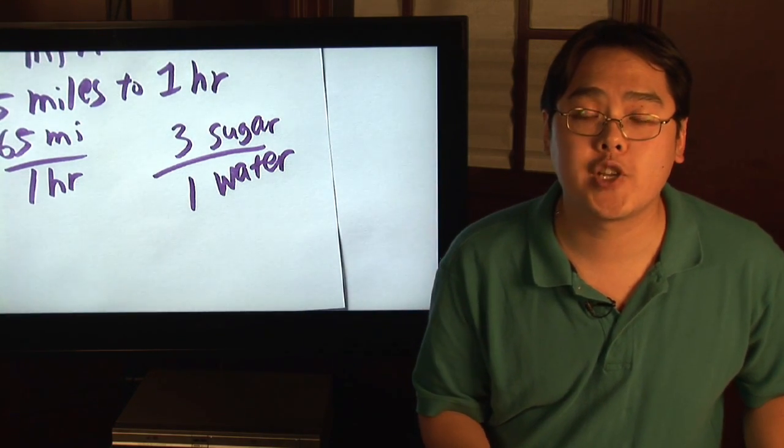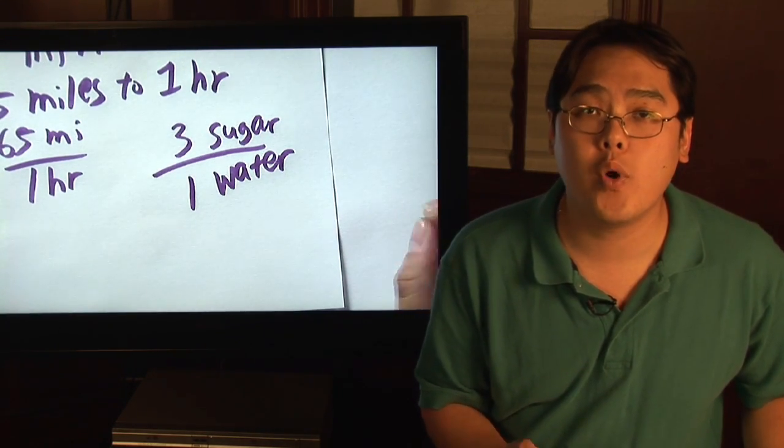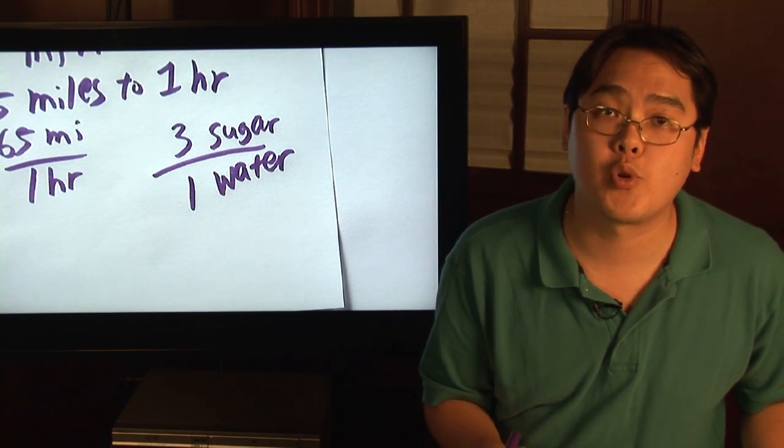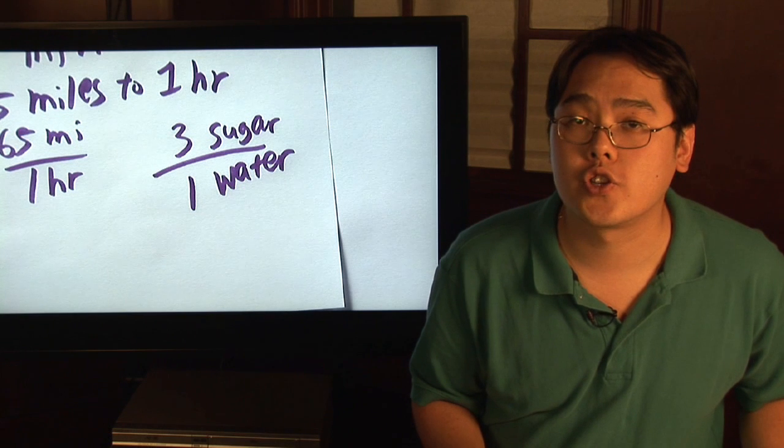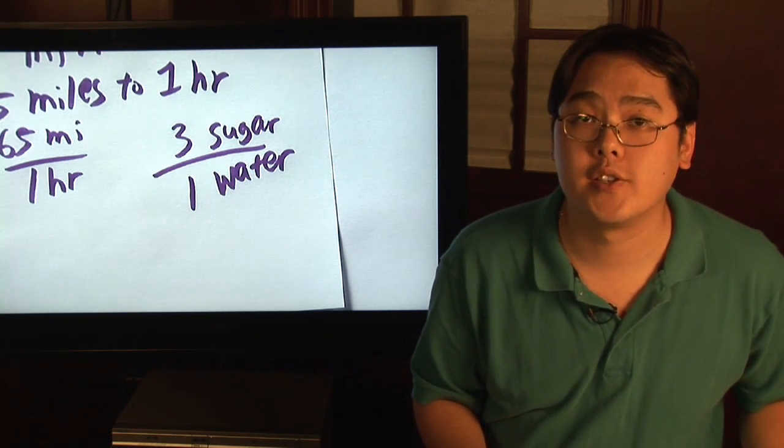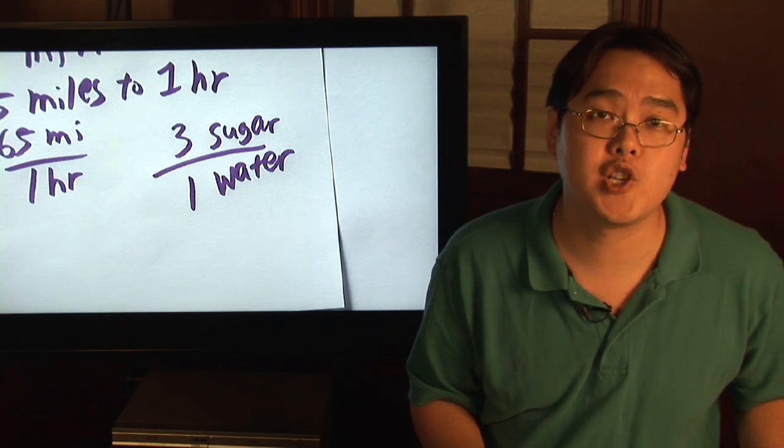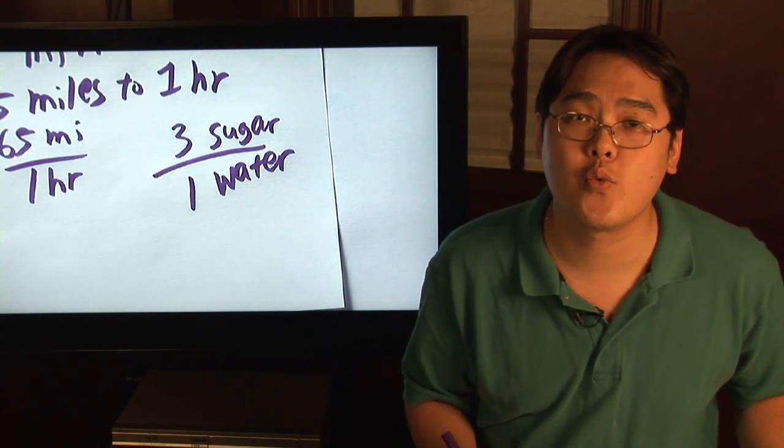So any time you have a situation where you have a certain number of one quantity versus one unit of another quantity, whether it be miles per hour or sugar to water, you have what's called a unit rate because it will always be consistent in that particular comparison. So, I'm Jimmy Chang and that's an example of a unit rate in math.